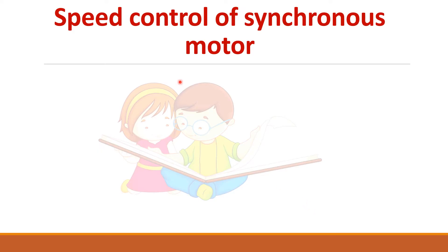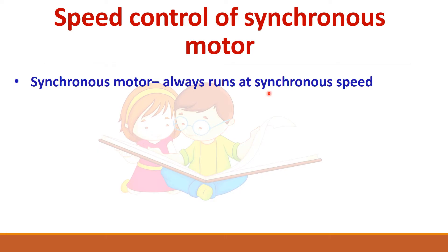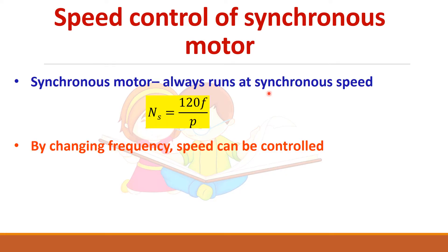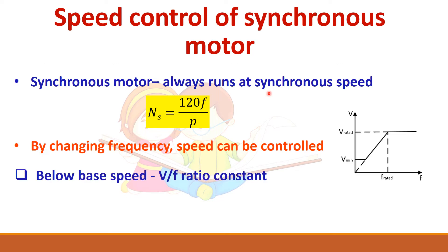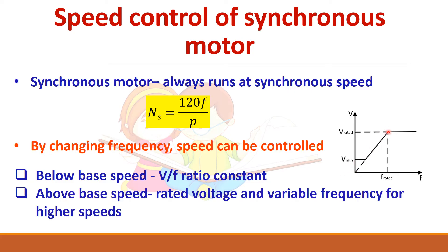The synchronous motor always runs at synchronous speed given by 120F by P, so speed can be controlled by changing the frequency. For below base speed, we keep the V by F ratio constant. For above base speed, the voltage has reached its rated value and we cannot increase it further, as that would cause insulation damage. So above base speed, it is necessary to maintain the rated voltage while increasing the frequency — that is, rated voltage and variable frequency is applied.